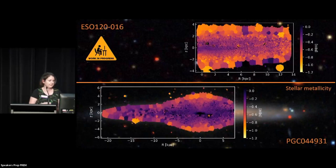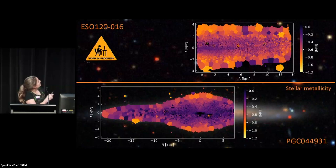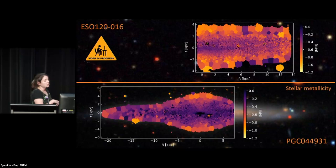Moving on to the metallicity — similar again, central regions look to be fairly metal rich. The outer regions, which we expect to be the thick disk at least in this galaxy, seem to be a bit more metal poor, which is in line with what we'd expect if you build a thick disk via mergers of smaller galaxies. I could actually make out the boxy peanut bulge in the metallicity map, so that's also very exciting.